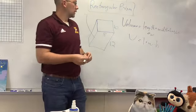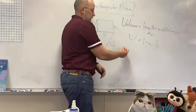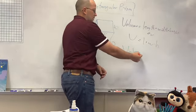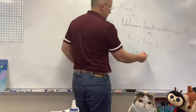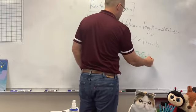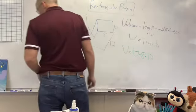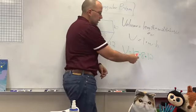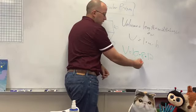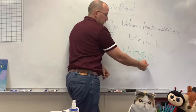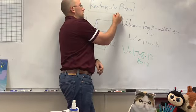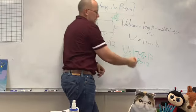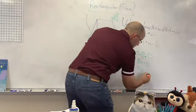Here's example number 2. I need to know my volume. My length is 10, times my width, times my height. 10 times 8 is 80, then times 12 is 960. I'm going to say this is units cubed.